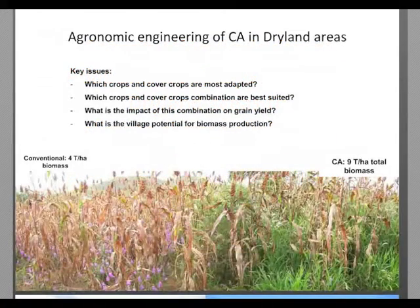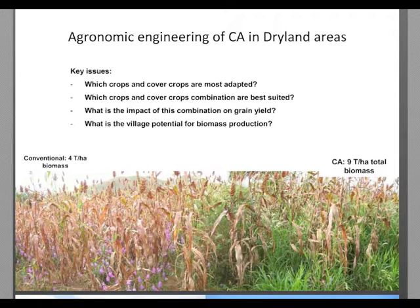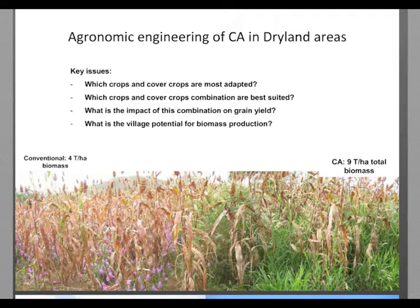Agronomic engineering, as we have said, key questions concern which crops and cover crops are most adapted. This question is crucial because in dryland areas, all crops and cover crops are not suited for the types of climate.